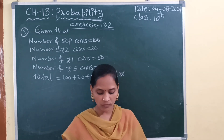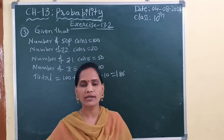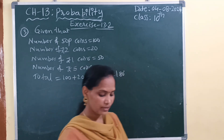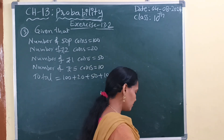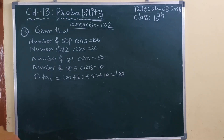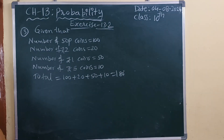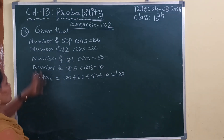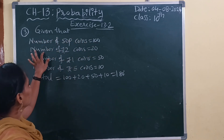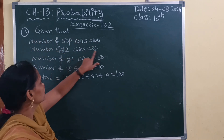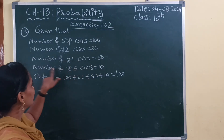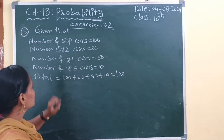So for these two situations we can find the probability. First, the given information from the question: number of 50 paise coins — 150 given; number of 2-rupee coins — 20 given; number of 1-rupee coins — 50; number of 5-rupee coins — 10.